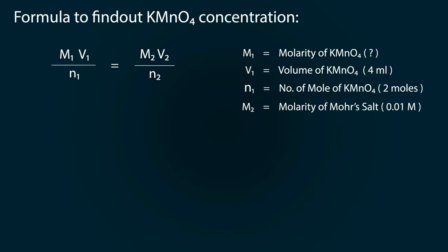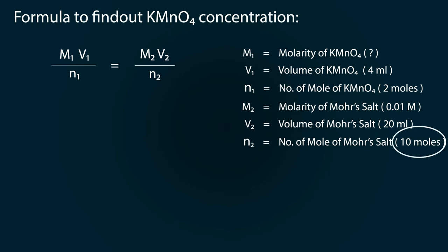M2 is the molarity of Mohr's salt, which is 0.01 molar. V2 is the volume of Mohr's salt, which is 20 milliliters. n2 is the number of moles of Mohr's salt, which is 10 moles, calculated from the reaction.